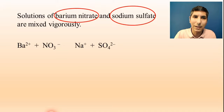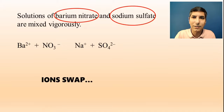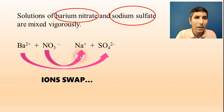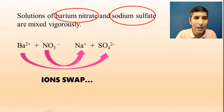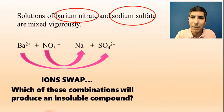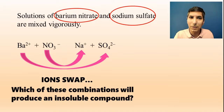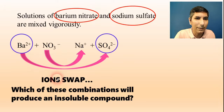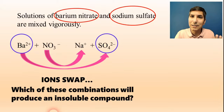Once you write these reactants in ion form, you need to realize that the ions are going to try to swap partners. So that means that this barium is going to try to pair up with the other negative ion, and likewise, this sodium is going to try to pair up with the other compound's negative ion. We have to ask ourselves which of those combinations is going to produce an insoluble compound. If you remember the solubility rules from last video, barium sulfate is the combination that's going to be insoluble.